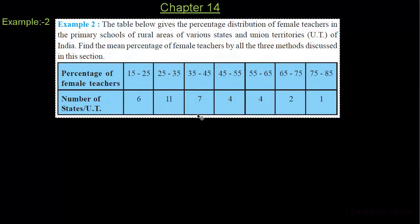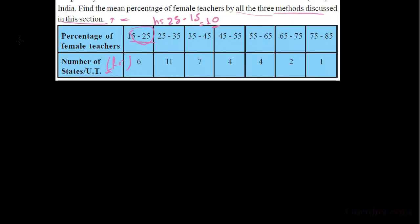Here is Example 2 of Chapter 14. In this example, we have to find the mean percentage of female teachers by all three methods discussed in this session. In this table, the first row is percentage of female teachers, which is in the form of class intervals. The class size of this interval is h equal to 25 minus 15, which is equal to 10. The second row is number of states or UTs, which is also known as fi.